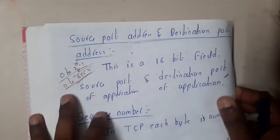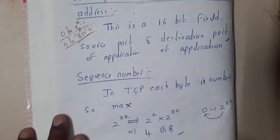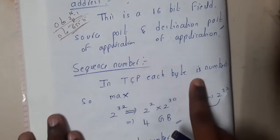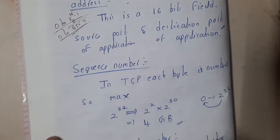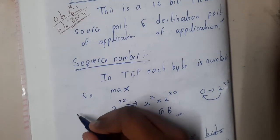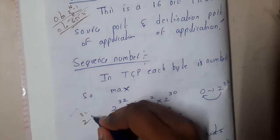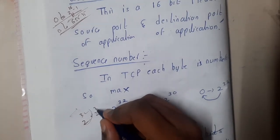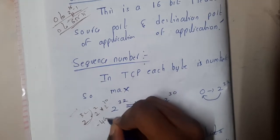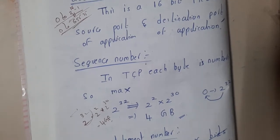The next part is the sequence number. In TCP, each and every byte is numbered. The sequence number field is 32 bits wide, which means 2^32 values — that is 2^2 × 2^30, which equals 4 GB of data can be numbered. So up to 4 GB of data can be sequenced, which gives you an idea of what sequence numbers represent and to what extent you can number the bytes.